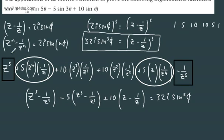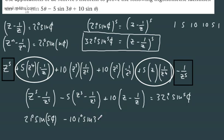Let's now consider substituting back. We know z to the n minus 1 over z to the n equals 2i sine n theta. So z to the fifth minus 1 over z to the fifth gives 2i sine 5 theta. For the minus 5 group, we have minus 5 times 2i sine 3 theta, which is minus 10i sine 3 theta. And for the 10 group, we get plus 10 times 2i sine theta, which is plus 20i sine theta.